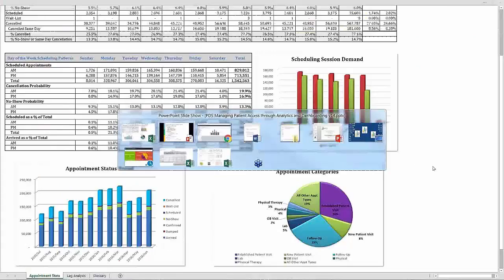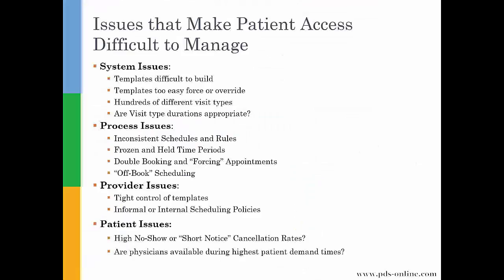Here's the issue when you move forward: the first thing I always tell people when we start reporting on patient access is that the first thing you're going to find are all of the things that you're doing from a process standpoint that sabotage your patient access reporting. It may be a system issue or a process issue — are we under-templating, over-templating? Are we forcing policies and internal inconsistencies provider by provider that are really making it difficult to manage things? Looking at the processes is the first place to begin.